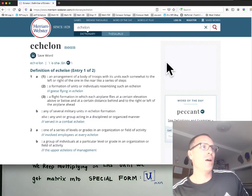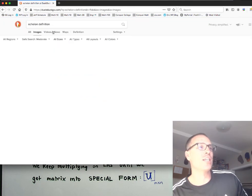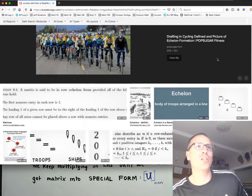An arrangement of a body of troops within its units to somewhat left or right like a series of steps. A formation of units or individuals resembling such an echelon. A flight formation in which each airplane is at a certain elevation above or below to the right or left. What is nice about this is you can actually get an image search.